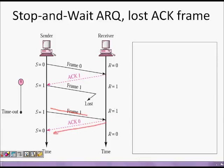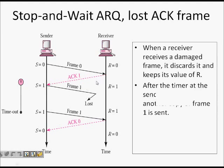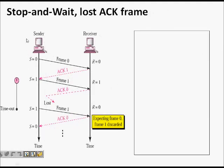When a receiver gets a damaged frame, it discards it. The value of r remains the same and it never sends a NACK. After the sender's timer expires, the sender retransmits. The sender keeps a copy of the sent frame until it receives an acknowledgement. This is how the stop-and-wait protocol handles damaged frames.